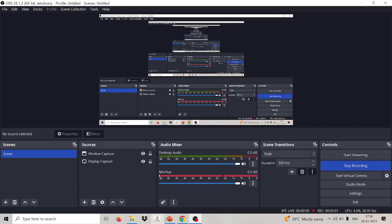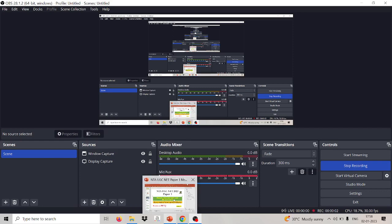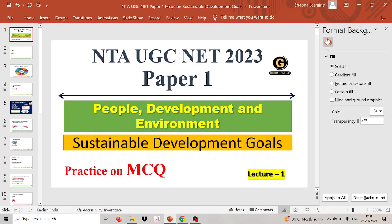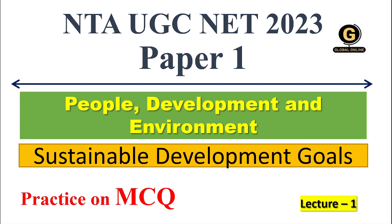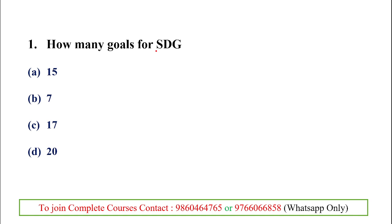Hello friends, welcome to Global Online. Today we are discussing NTA UGC NET 2023 Paper 1. In this class we discuss about People, Development and Environment — a beautiful topic from UGC NET — and we will discuss Sustainable Development Goals through MCQs.